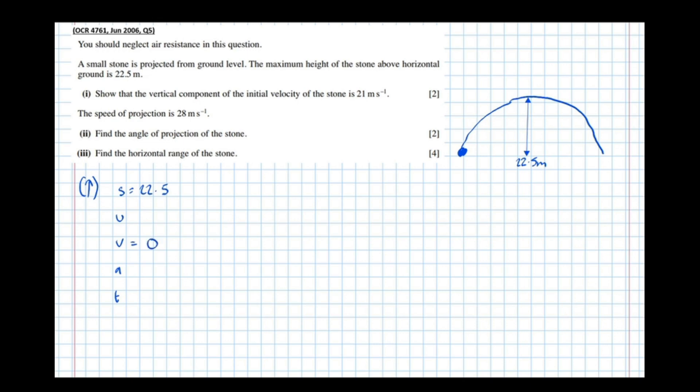Because it's at its maximum height, the velocity is zero, because it's just turning. If we're considering up to be the positive direction, which we are, acceleration goes in the opposite direction, so minus 9.8. And it's the initial velocity, the vertical component of that, that we're trying to find. So U, we don't know. T, nothing to do with the question.